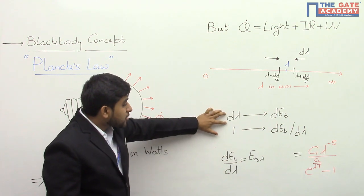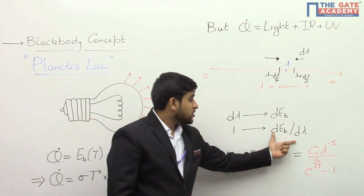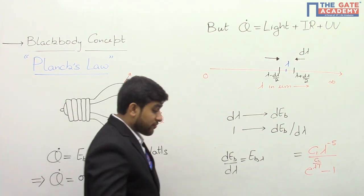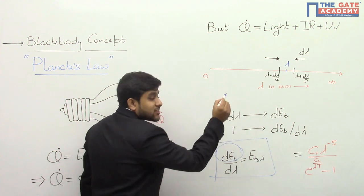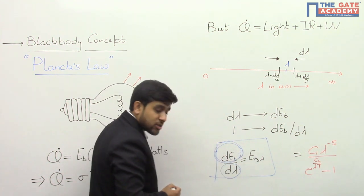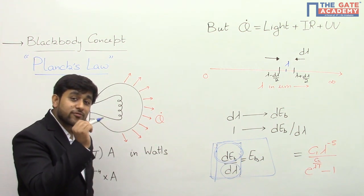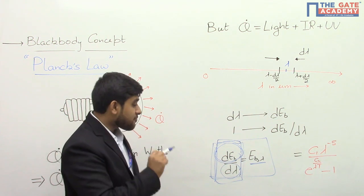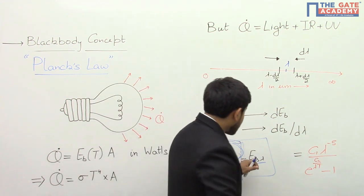Using the unitary method: if the energy emitted in d-lambda range is d-Eb, then the energy emitted per unit wavelength range is d-Eb divided by d-lambda. This ratio is known as the monochromatic emissive power, which we denote by Eb,λ. So d-Eb is the amount of energy emitted in wavelength range d-lambda around lambda, per unit time per unit area. When we divide this energy by the wavelength range, we get the energy emitted per unit time, per unit area, per unit wavelength range around lambda — and this term is known as the monochromatic emissive power.